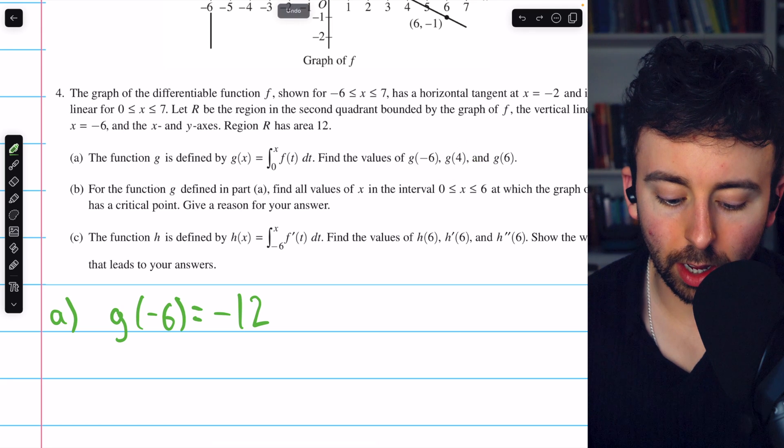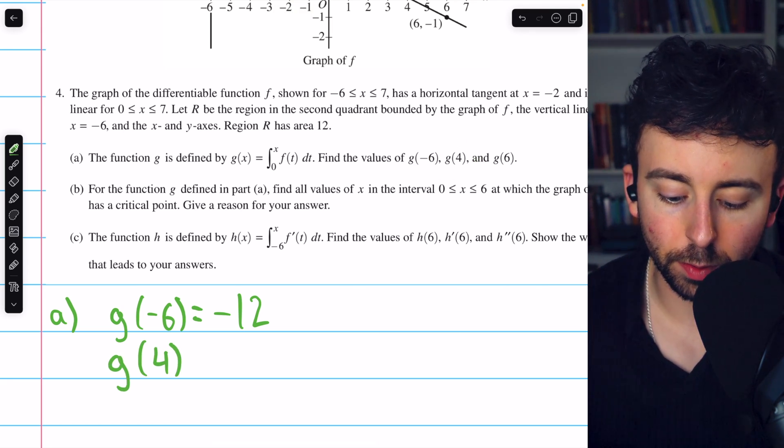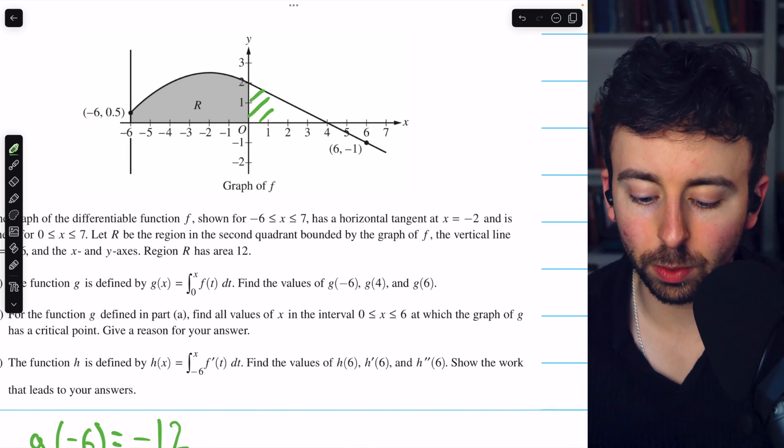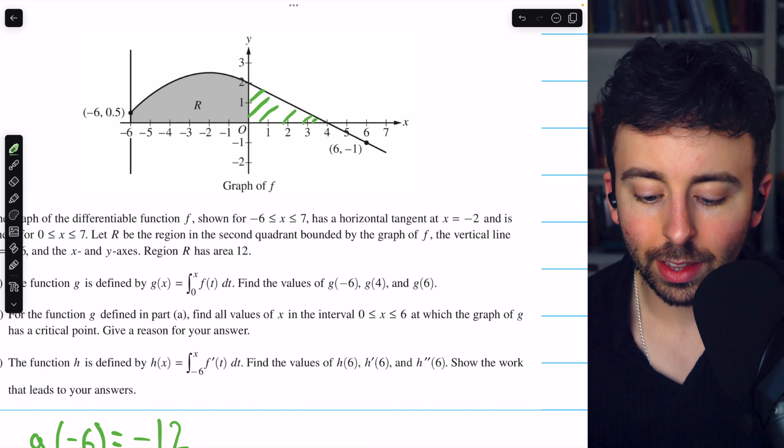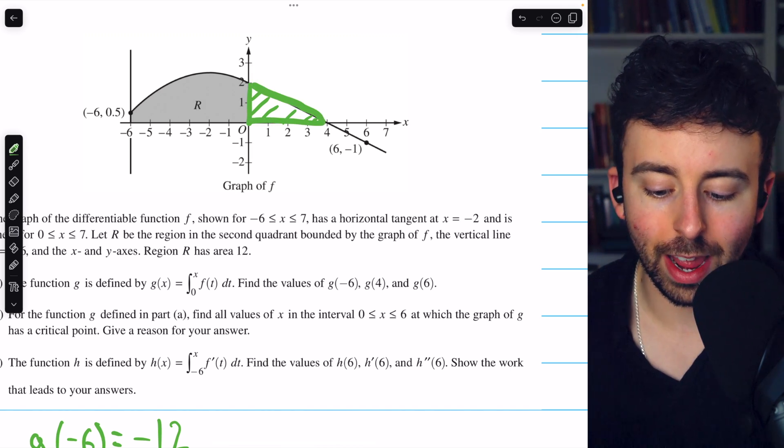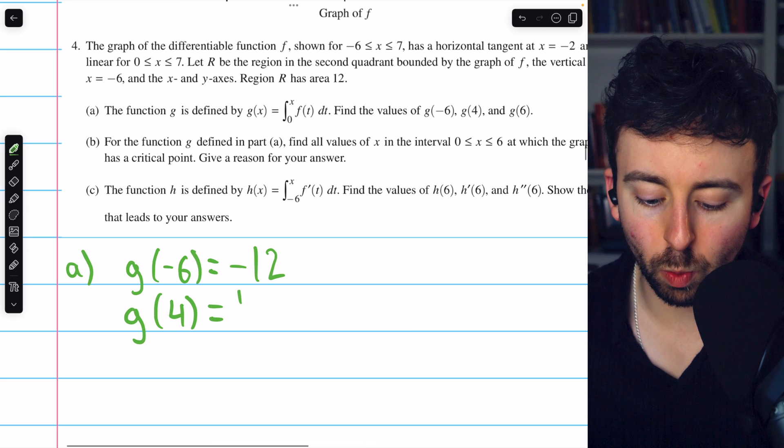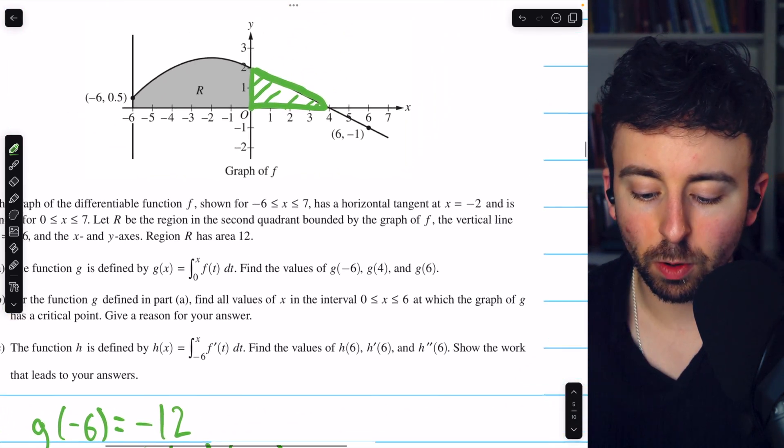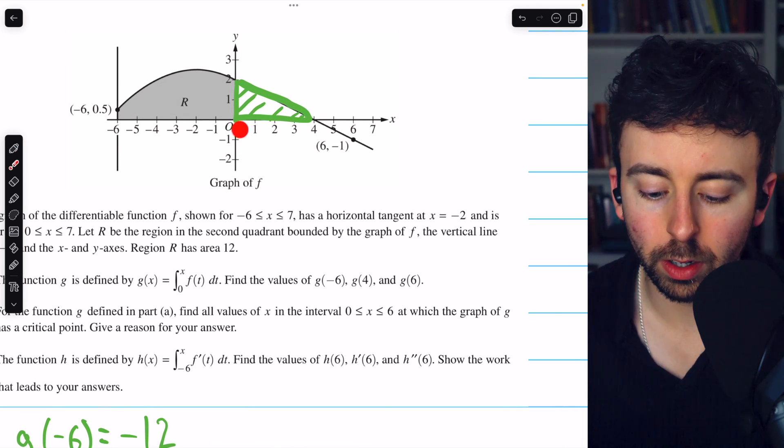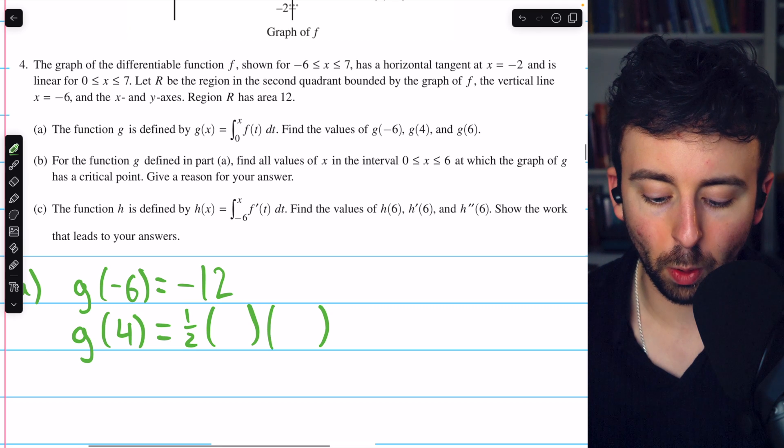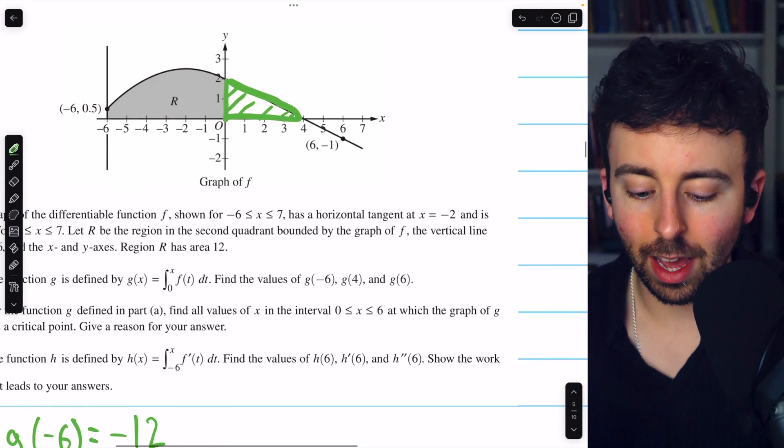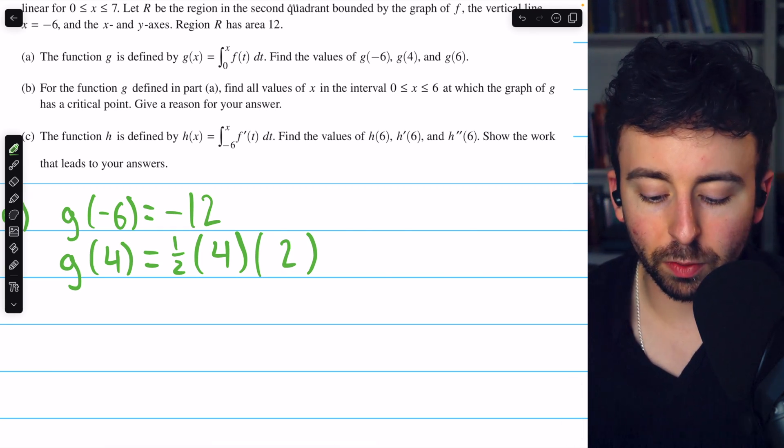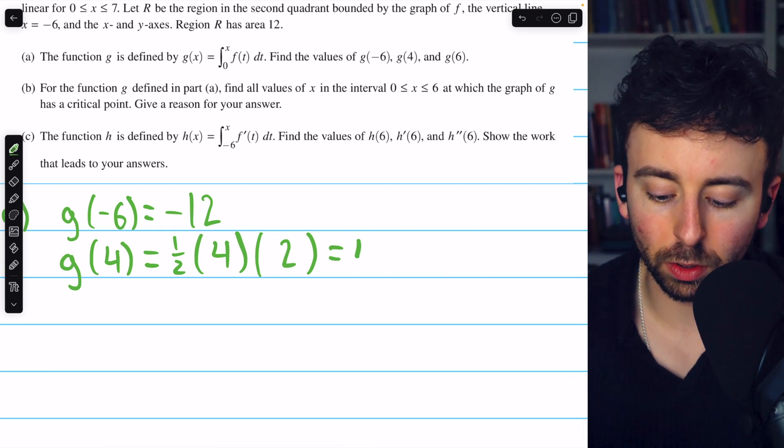Next up is g of 4. To calculate g of 4, we just have to calculate the area under the curve from x equals 0 to x equals 4. That's just the area of this triangle. So g of 4 is going to be 1 half multiplied by the base of the triangle multiplied by the height of the triangle. The base of the triangle is just 4, from 0 to 4. So we will put 4 there for the base. And the height, we can see, is just 2. So our height there is 2. 1 half times 4 times 2 is equal to 4.